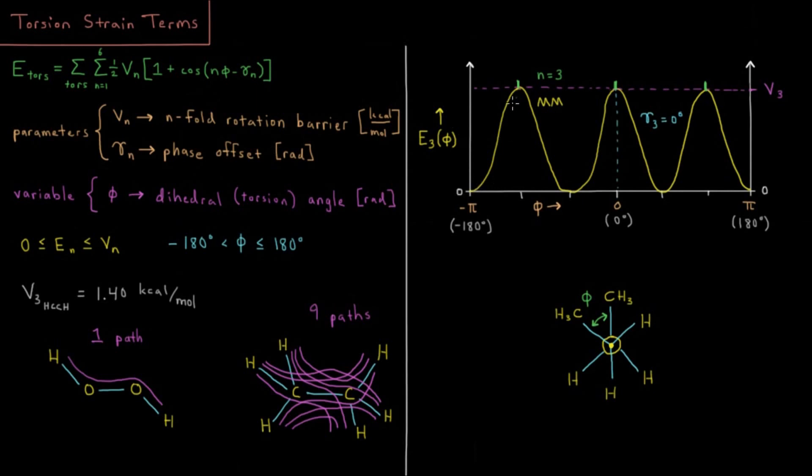So what this gives us is a graph here. This is a cosine and it has an N fold frequency there. So three fold from negative pi to pi radians is going to go up and down three times.